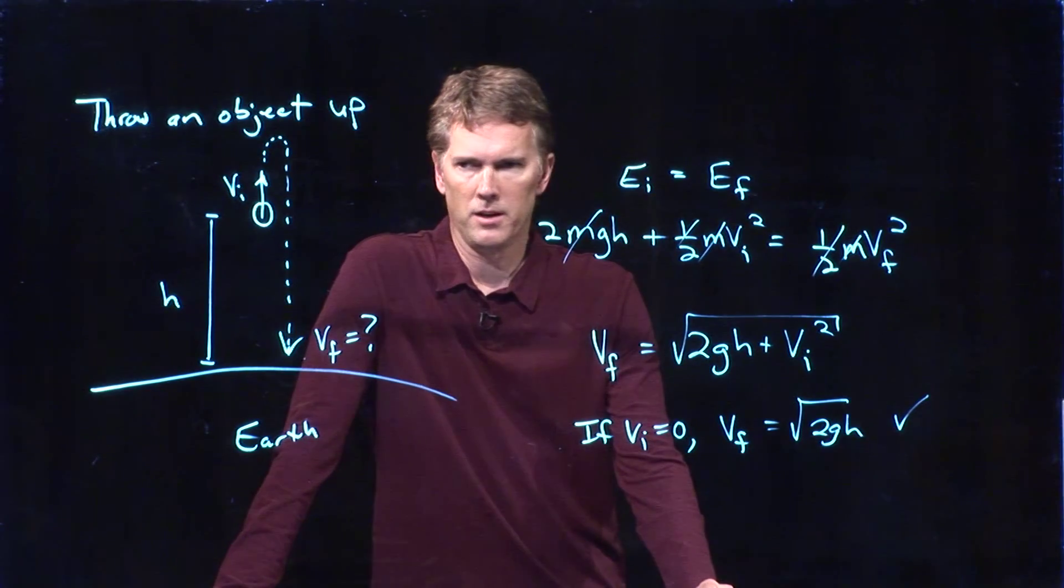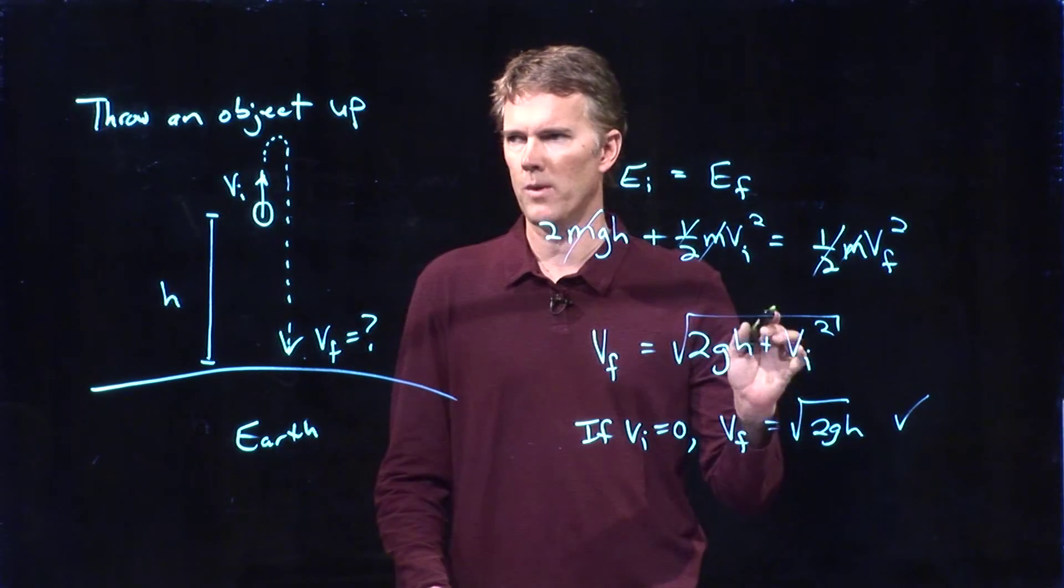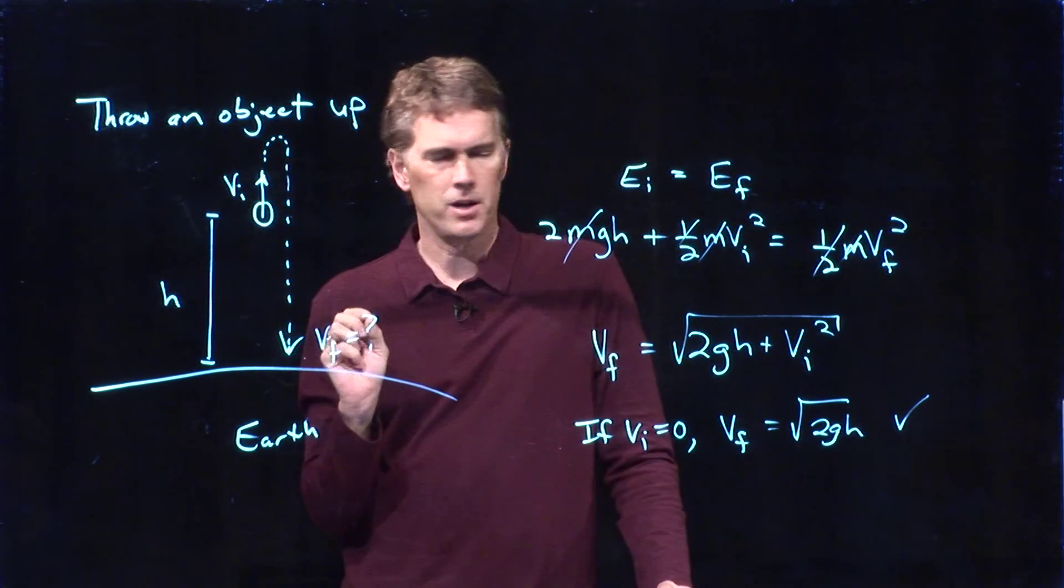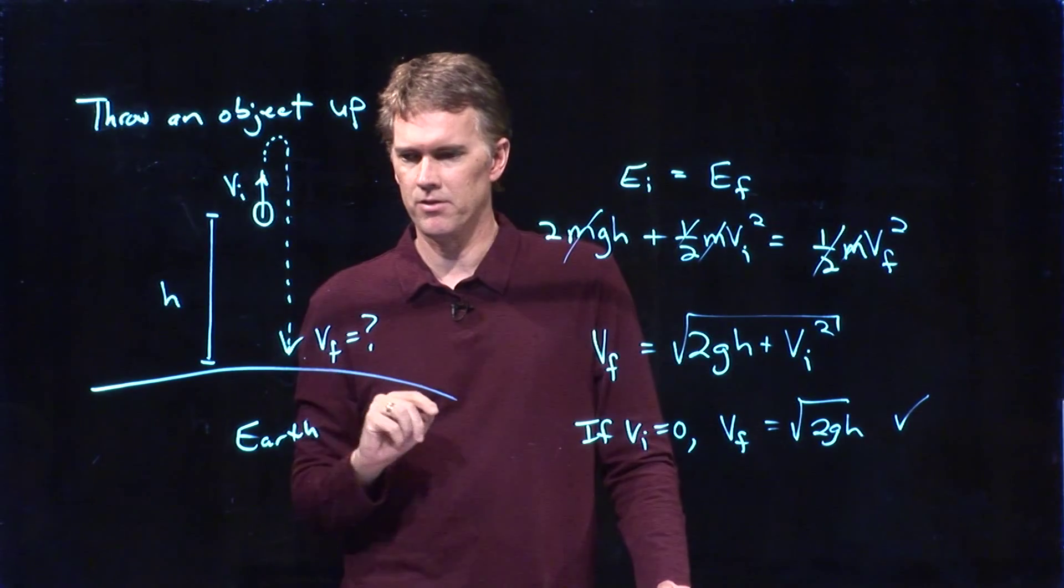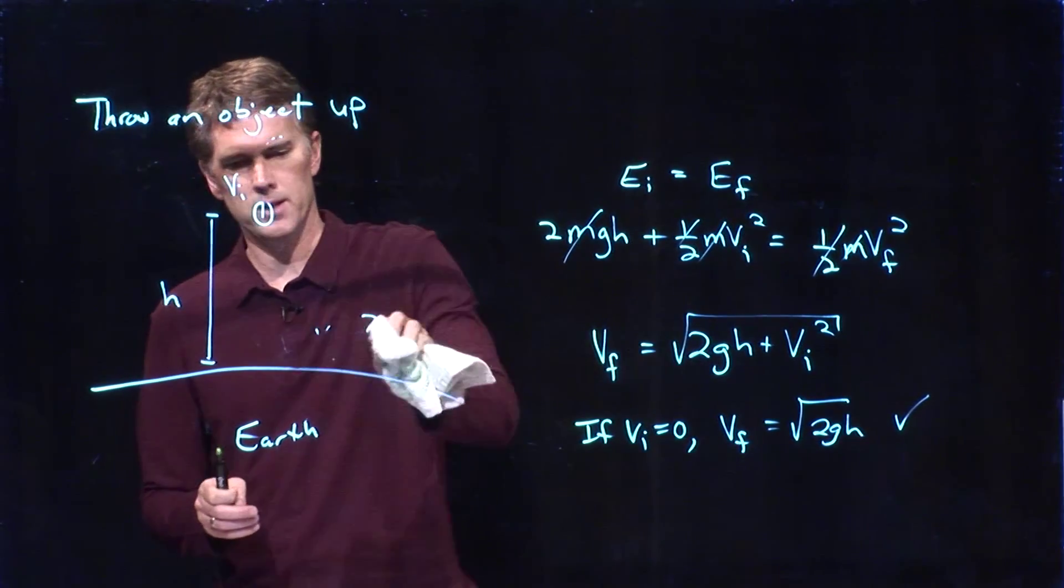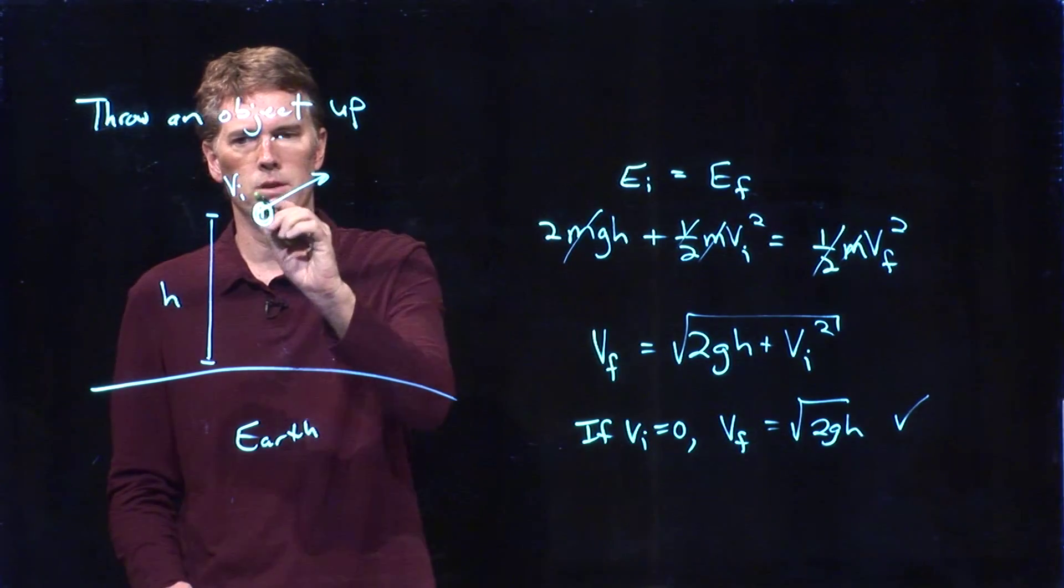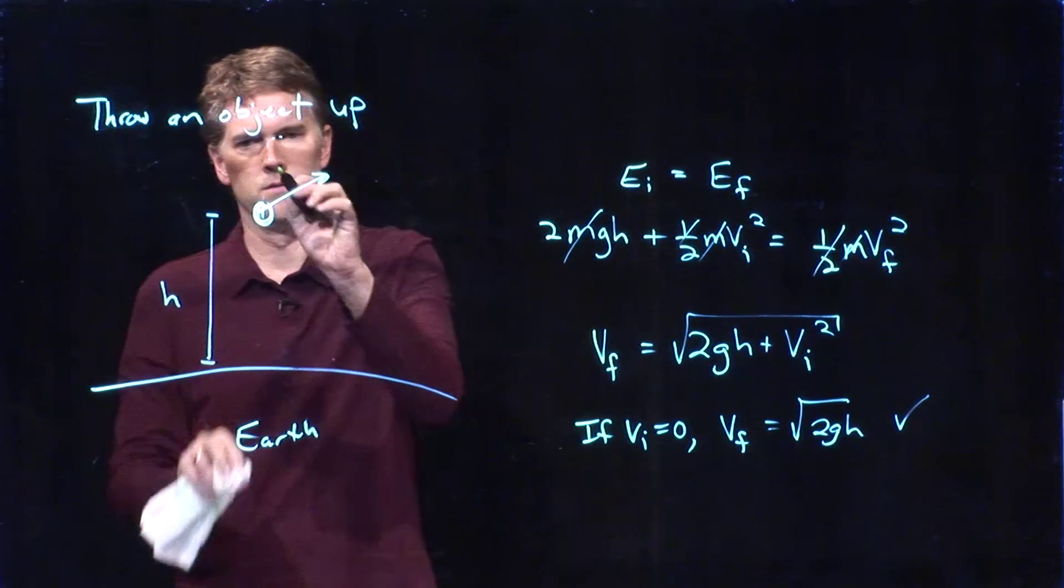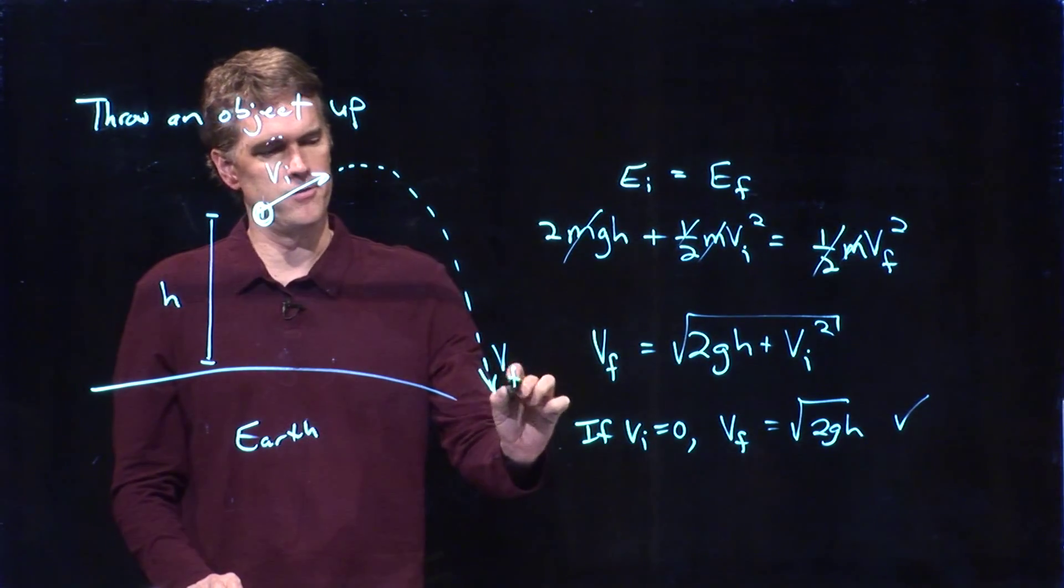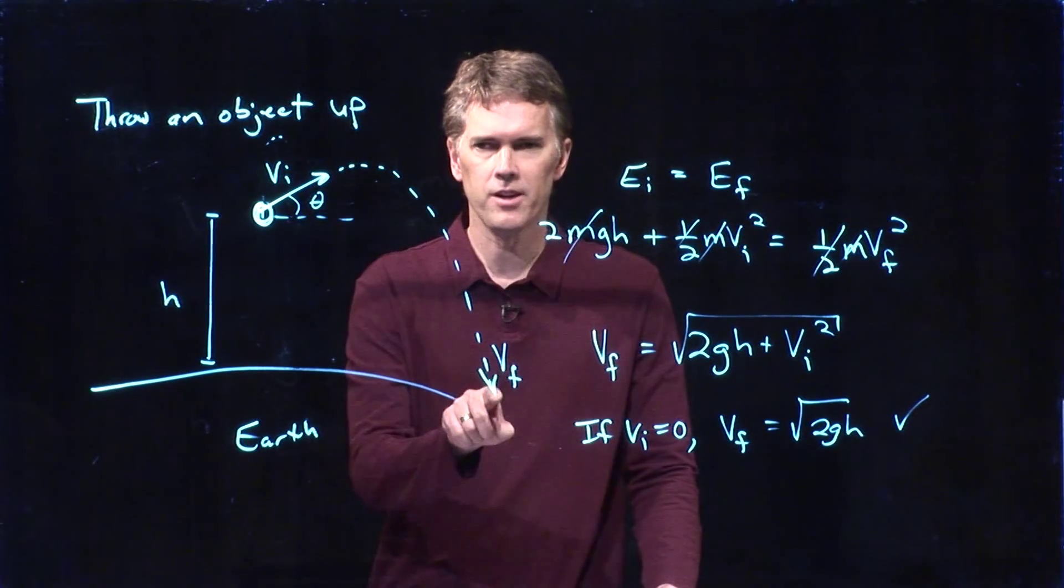But there's something sort of interesting here. The interesting thing is we didn't tell you what direction you threw this object. So we said you're going to throw it up, but did we say you're going to throw it straight up? Not necessarily. In fact, let's say we didn't throw it up, we threw it out at an angle. If we threw this object out at this angle with speed vi, comes down here, hits the ground at vf, and let's say that is angle theta. What is this vf?